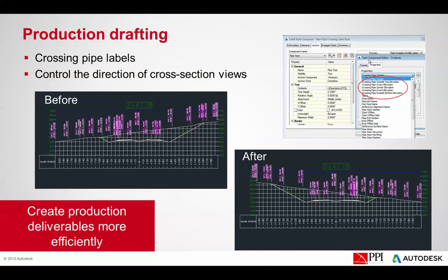Under production drafting, they've given us what was missing before — crossing pipe labels. We can now get labels where pipes cross the alignment, with proper information such as outside of the pipe, the crown of the pipe, the center line of the pipe, and the invert or outside bottom of the pipe.